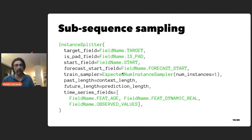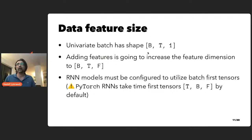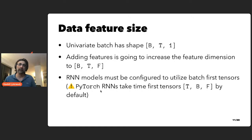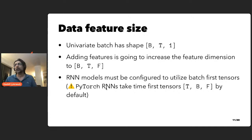The instance splitter selects training instances by slicing the target values of the time series as well as corresponding features like time features, at random points in training mode. At inference mode, it samples the last context window up till where the training window ends. In the univariate setting, a typical batch has some number of time steps and a single target value. The instance splitter also adds time features and other covariates, with a feature size denoted by F.